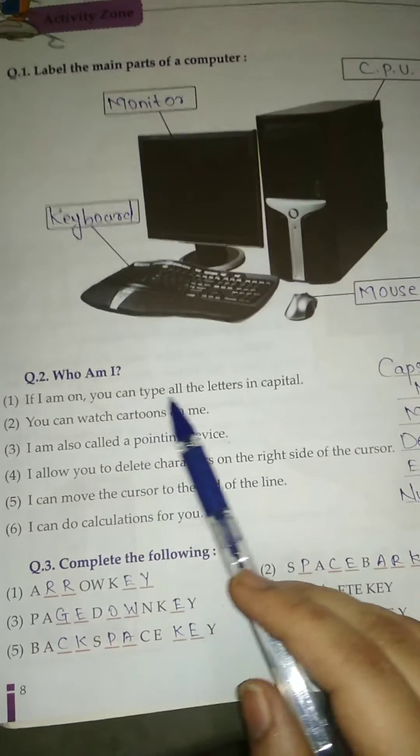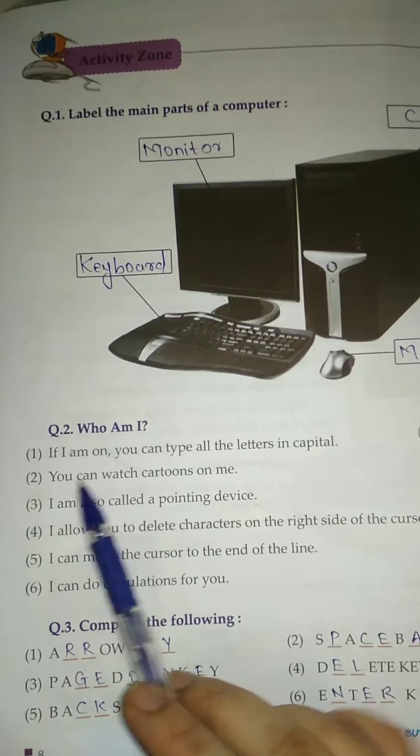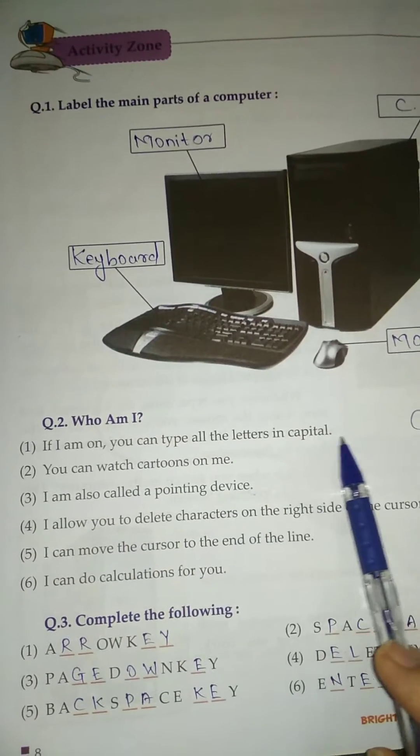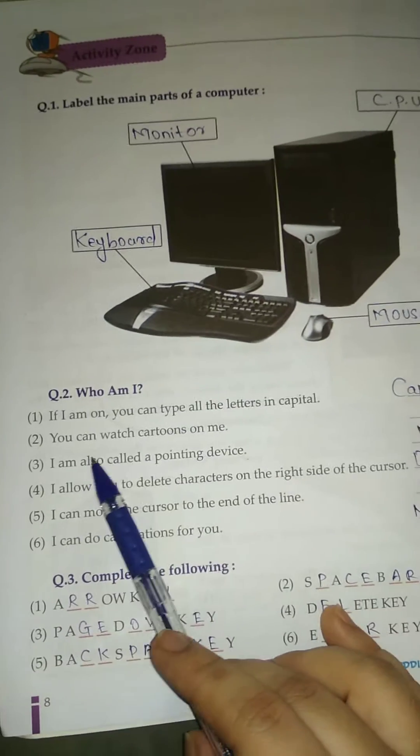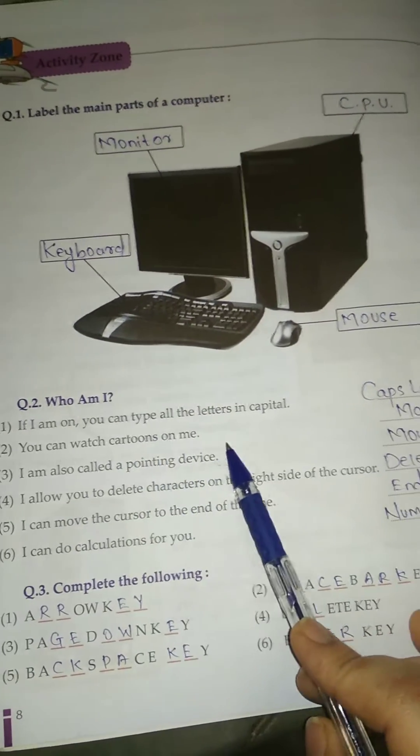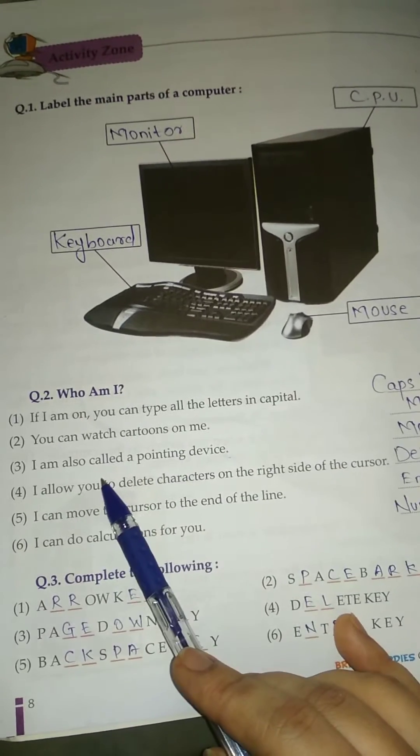Question Number 2: Who am I? Number 1, if I am on you can type all the letters in capitals - Caps Lock Key. Number 2, you can watch cartoons on me - Monitor.